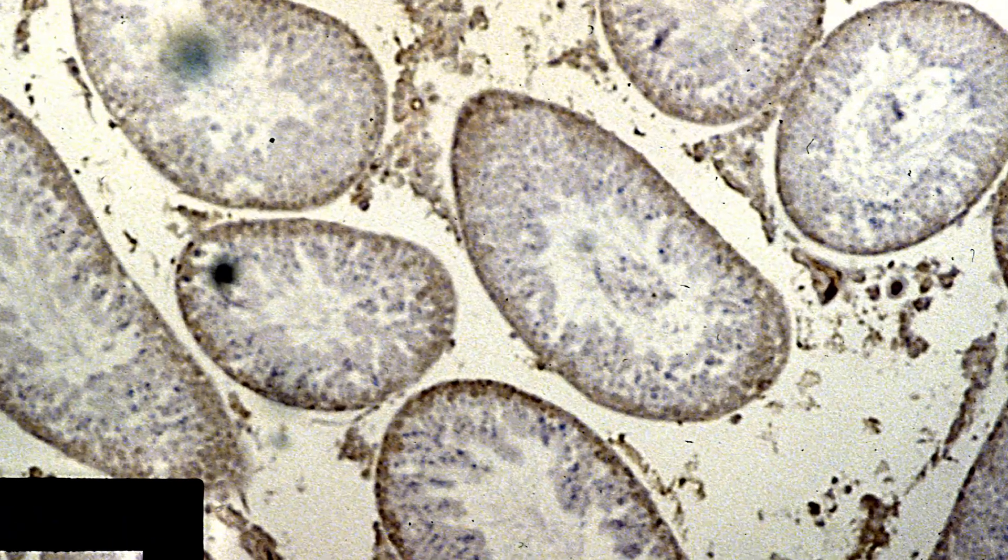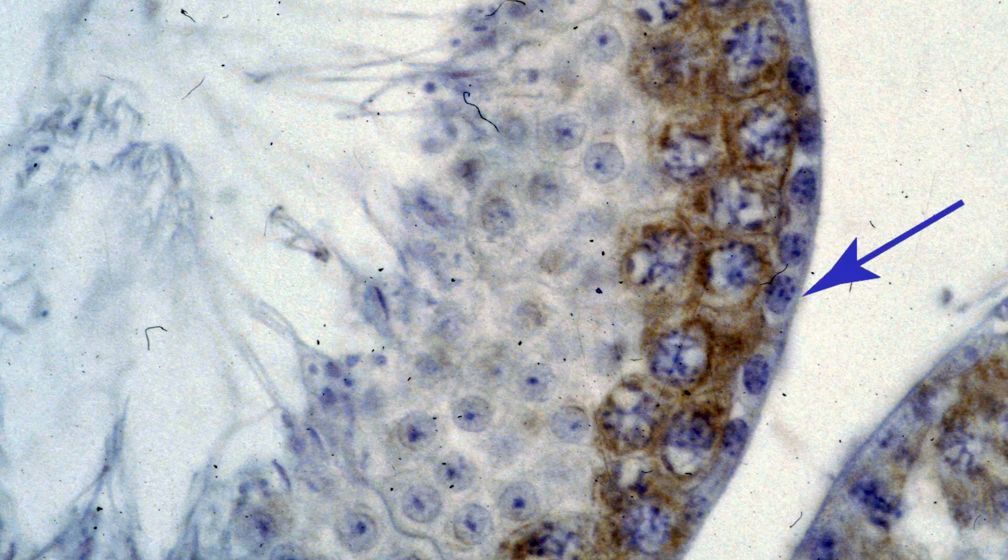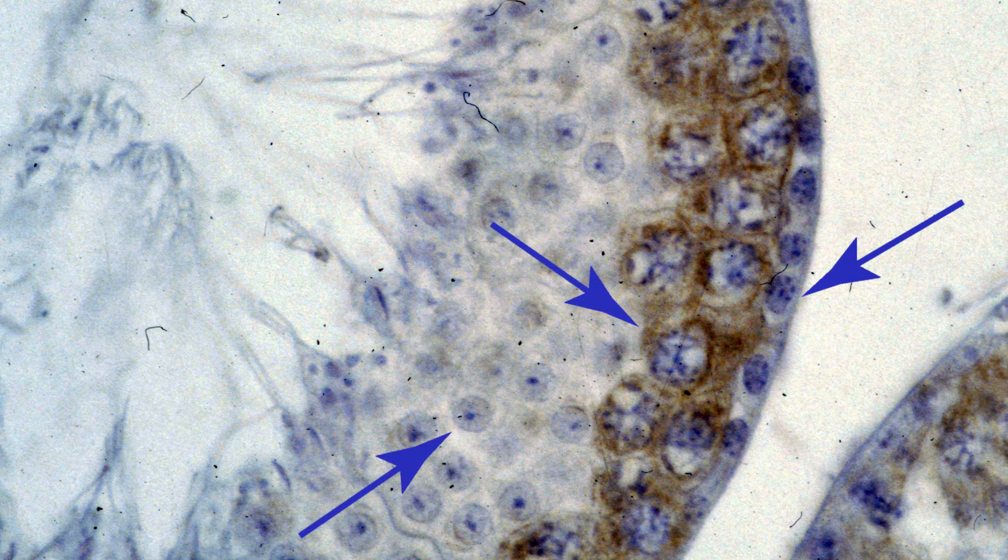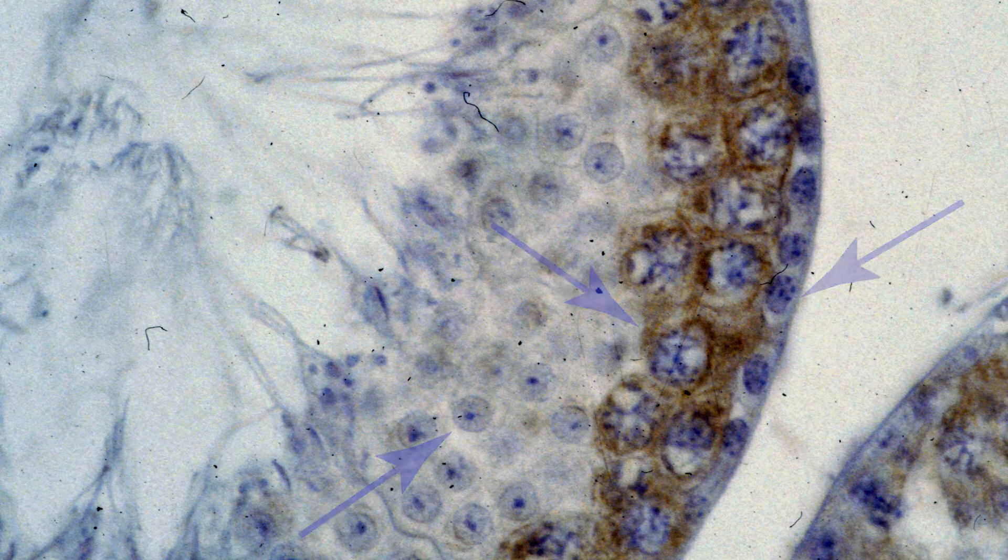Here we can see sections of mouse testes I prepared for research many years ago. The blue arrows point to cells in different phases of spermatogenesis. The red arrows indicate sperm cells with flagella.